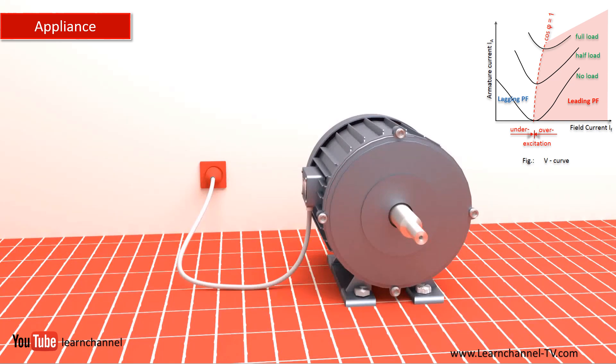By the way, the graph drawn between armature current and field current is known as the V-curve. Note that this synchronous motor and a three-phase generator have the same structure.